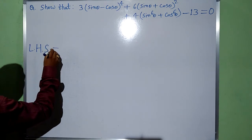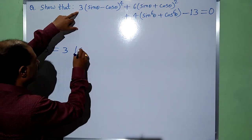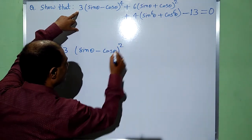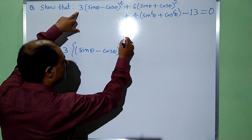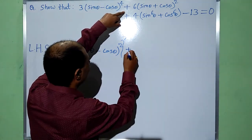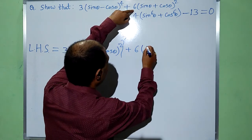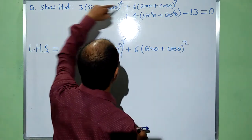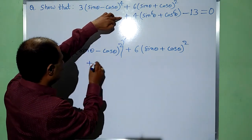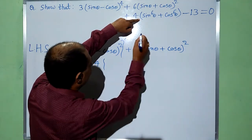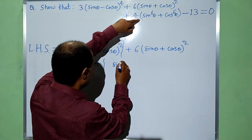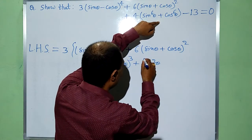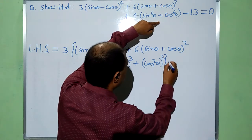LHS is equal to 3 into (sin θ − cos θ), we can write it like (sin θ − cos θ)² whole square, plus 6 into (sin θ + cos θ) whole square, plus 4 — we can write sin⁶θ as (sin²θ)³ plus (cos²θ)³ minus 13.